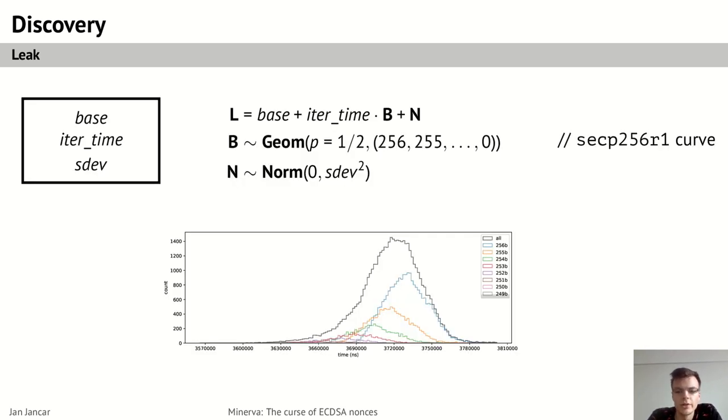To be able to compare the leakage in the implementations and simulate it, we modeled this leakage as this random variable L, consisting of the constant base time, which basically, for each implementation, it represents the constant time part of the computation, like hashing, for example. And then the interesting leakage of the bit length from the scalar multiplication loop, and then some noise. In this model, each implementation has the three parameters specifying how long it performs the constant time operations, how long it takes for one iteration of the loop, which is this iter_time constant, and what is the standard deviation of the noise.